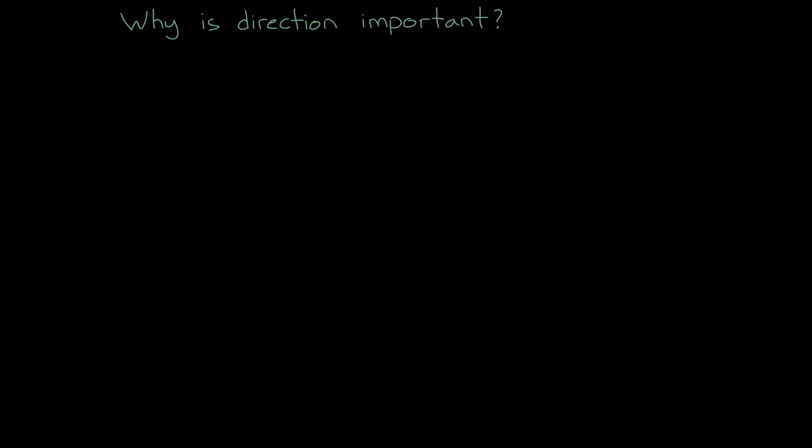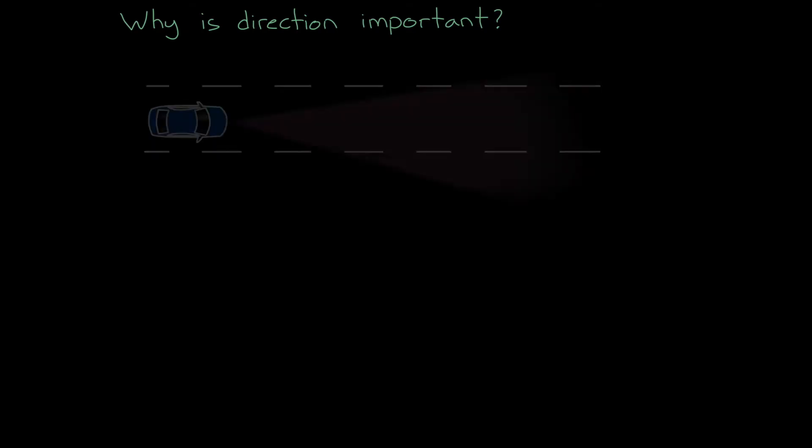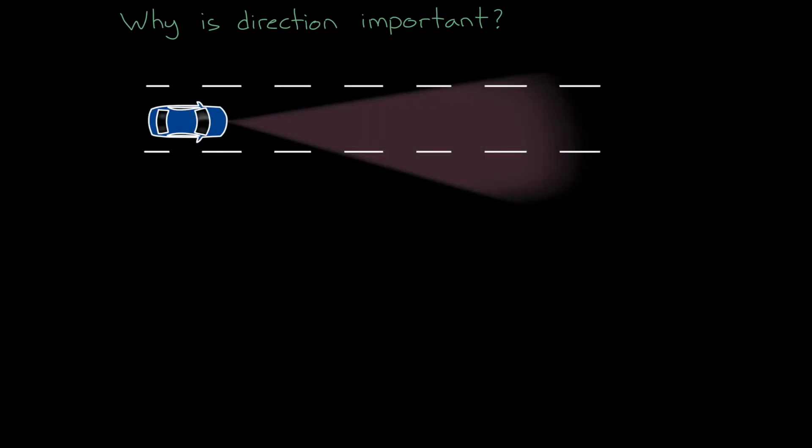Let's start by briefly discussing why it's important for the radar to know the direction to the detected object. As an example, let's take the forward-facing radar that is used for an adaptive cruise controller. A radar detection would indicate that there's an object somewhere in front of the vehicle, and we would know the distance and the relative speed to that object.